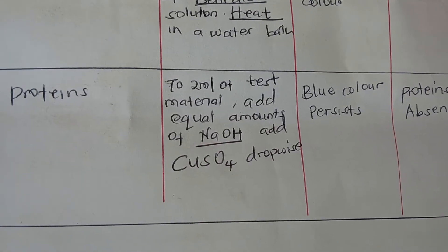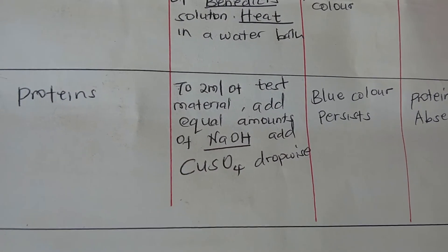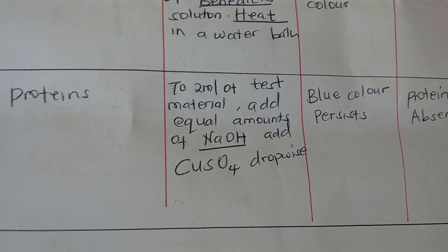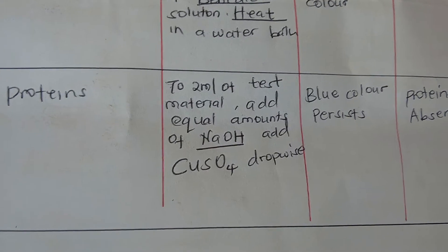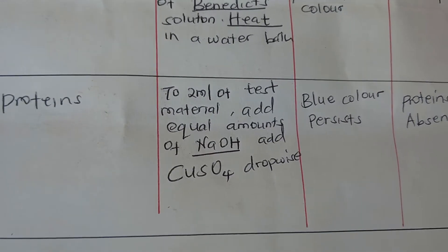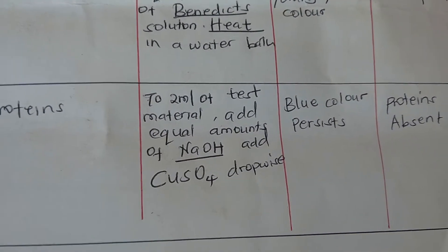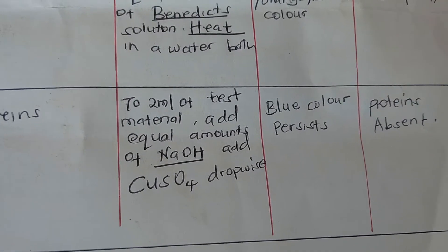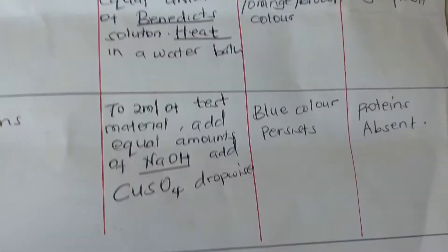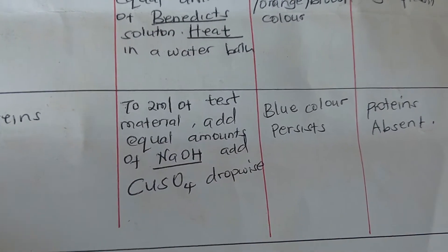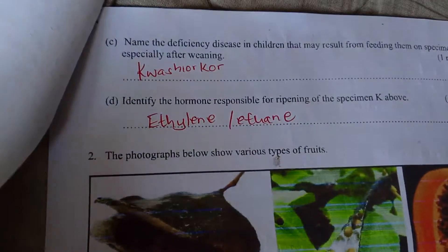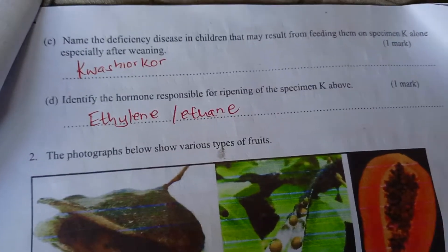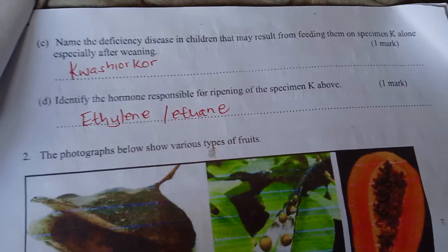For the test for proteins, add 2 ml of the test material into a test tube, then add an equal amount of sodium hydroxide, followed by copper sulfate added dropwise. You will see a blue color that persists, which shows that proteins are absent.